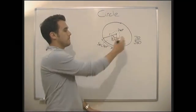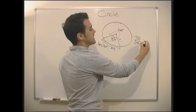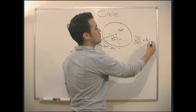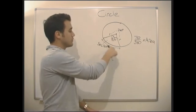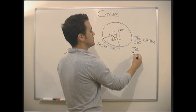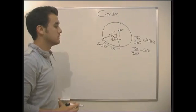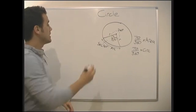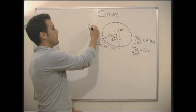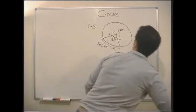So to work out the area, we would just times that by the area of the whole circle. If we wanted to just work out the arc, we would do 70 over 360 times by the circumference of the entire circle. So let's do that. Let's use r equals 5 as we had in the previous question.